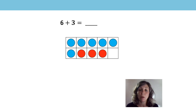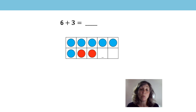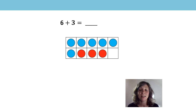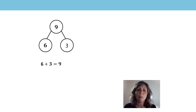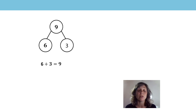You might also think about it because we know that 3 is 1 more than 2, and we have just learnt that when we add 2 to an even number it gives us the next even number, so that would be 8. And 1 more than 8 is 9. Let's have a look at it with the part-part-whole model. 6 is 1 part, 3 is another part, and 9 is the whole. 6 plus 3 is equal to 9.